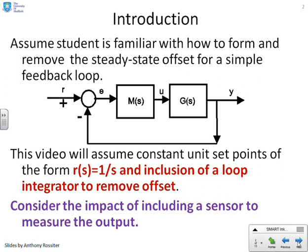In this video, we're going to continue to assume that we're using unit set points of the form R equals 1 over S. Also, we're going to make one assumption which wasn't normal in the previous videos: that there's going to be a loop integrator to remove the offset. That's necessary because otherwise the discussions we're making don't make sense and could be far more complex than you want to deal with.